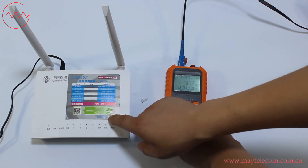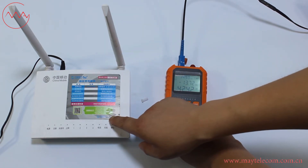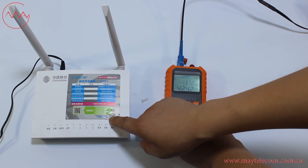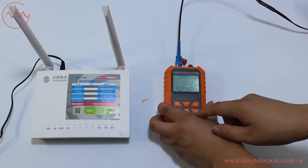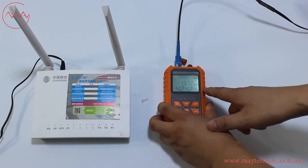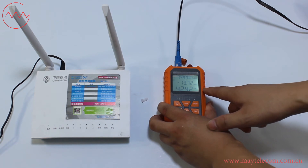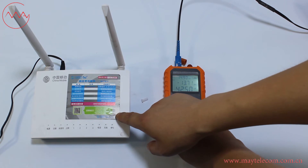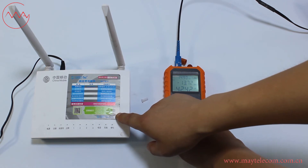The sensitivity of our ONU is minus 27 dBm. The receiving power of minus 13 dBm is much higher than the sensitivity of our ONU, so it's okay for our ONU to work.